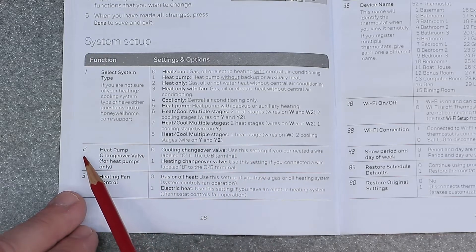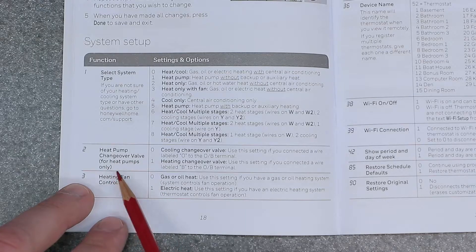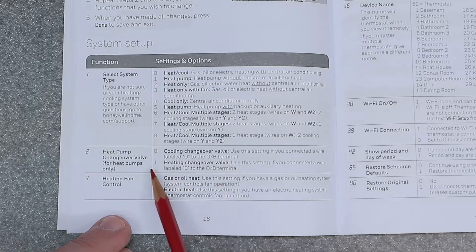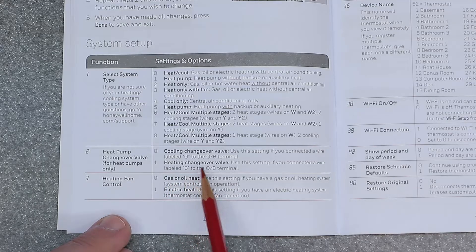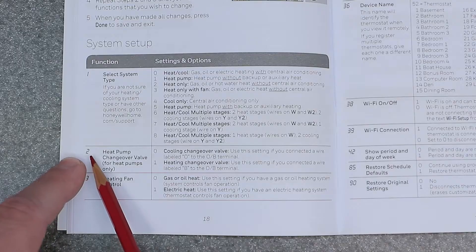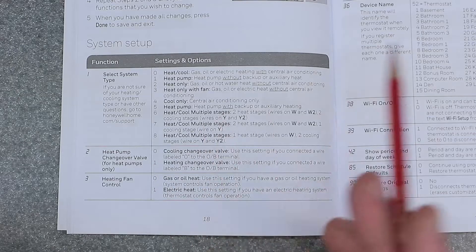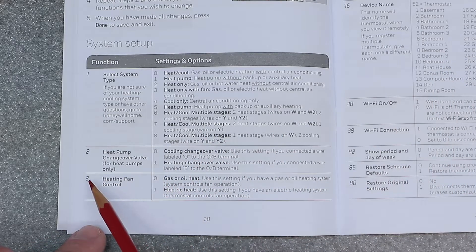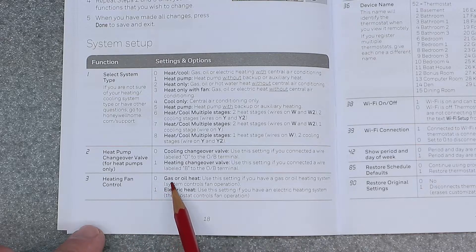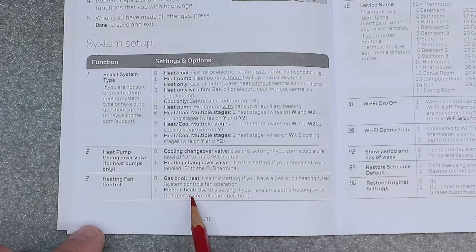Over to number two is heat pump changeover valve for heat pumps only. So we have zero is cooling changeover valve and one heating changeover valve. So like I said, this number here on the left is the number on the left on the screen. This option here is the one on the right. So number three is heating fan control. Zero equals gas or oil heat. One is electric heat.